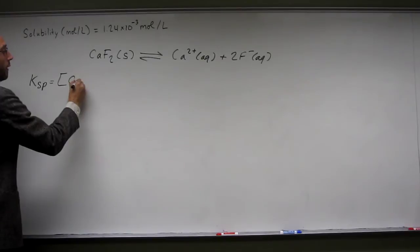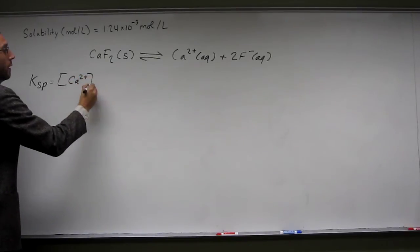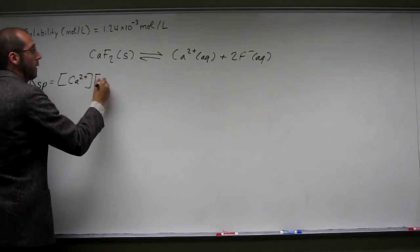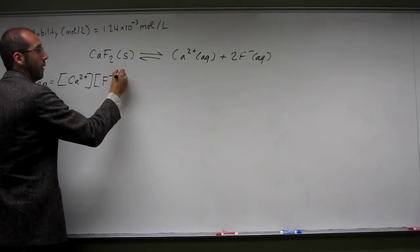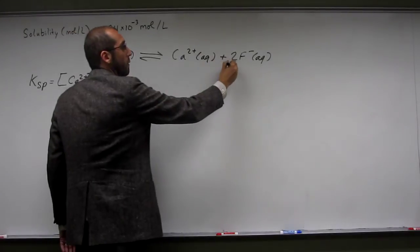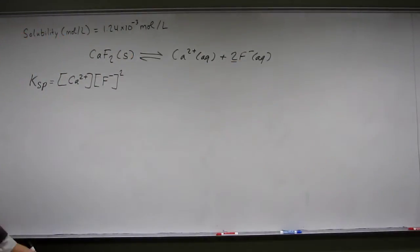Ksp equals the concentration of calcium ions times the concentration of fluoride ions squared. We get that squared from the coefficient there. So that's why we need to know the concentration of these calcium ions and the fluoride ions.